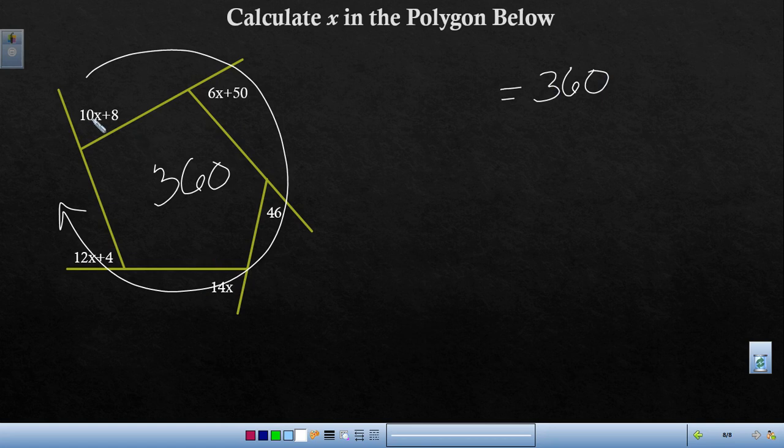So what I do for something like this is I just have to take each term and add them up. So I'm going to do the x's. 10x plus 6x is 16x plus 14x. So 16 plus 14 is 30x plus 12. That's 42x's. And then I got 8 plus 50 is 58 plus 46. So 46 and 58 is going to be 104.